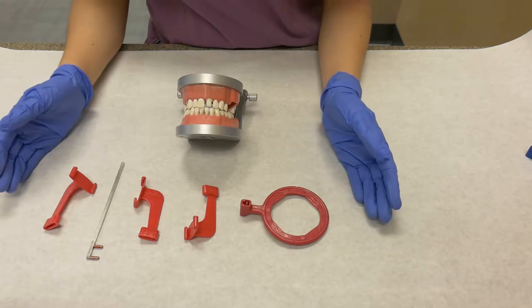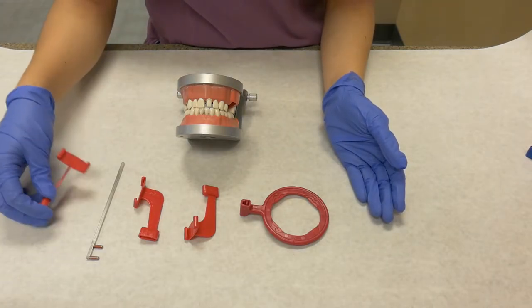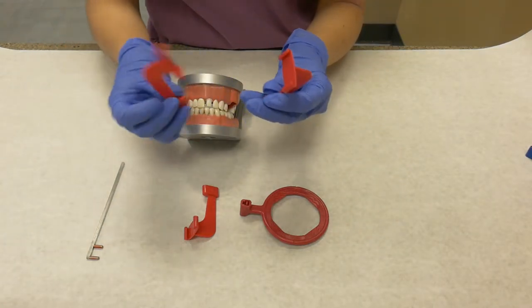The red XCP is used for bite wings, and this setup has three different bite plates.